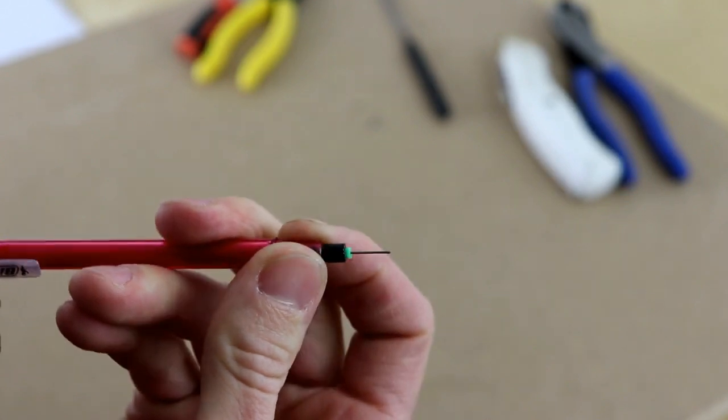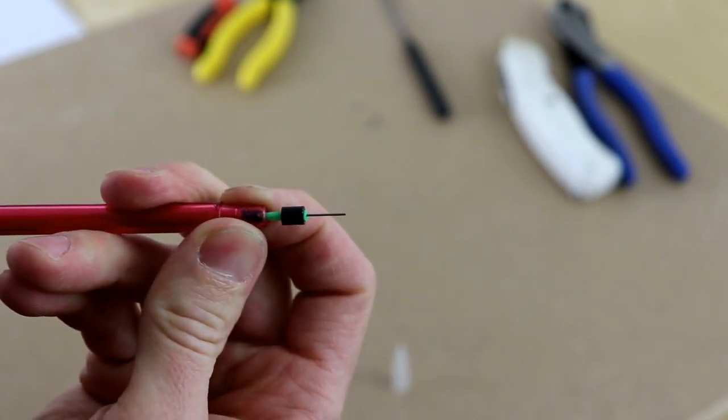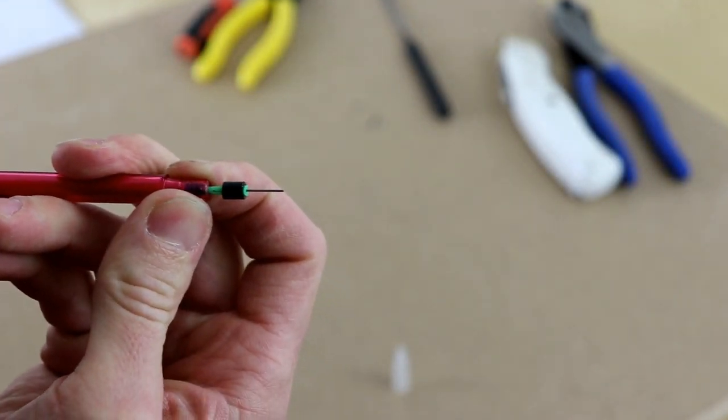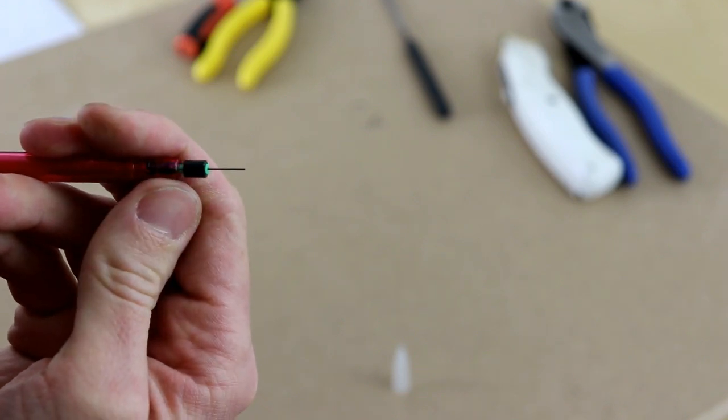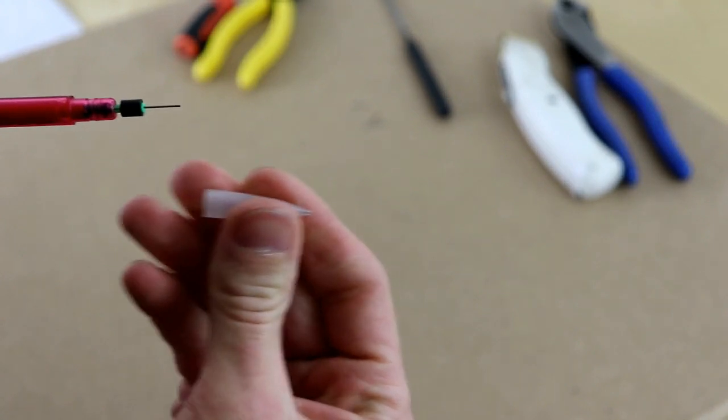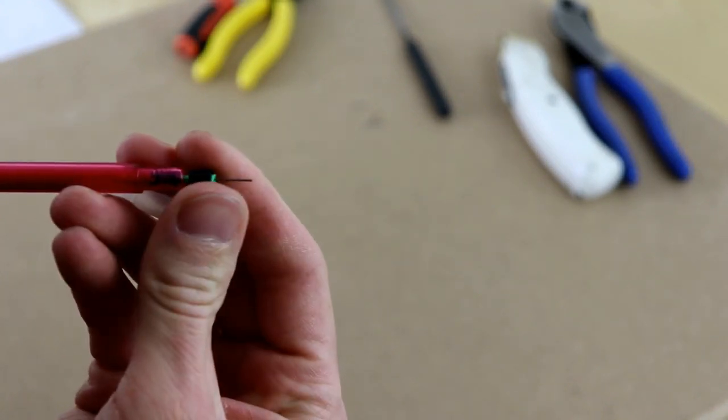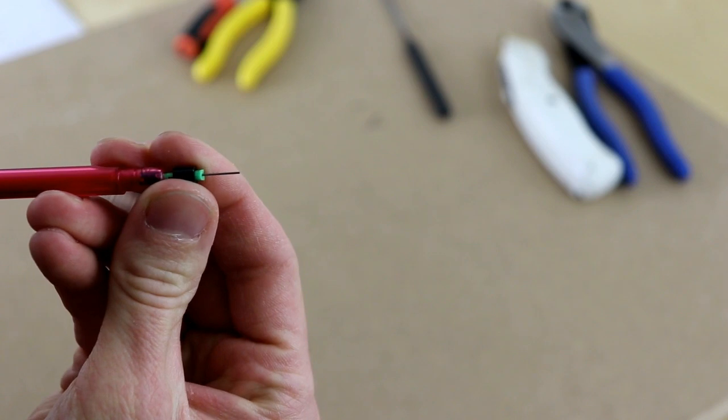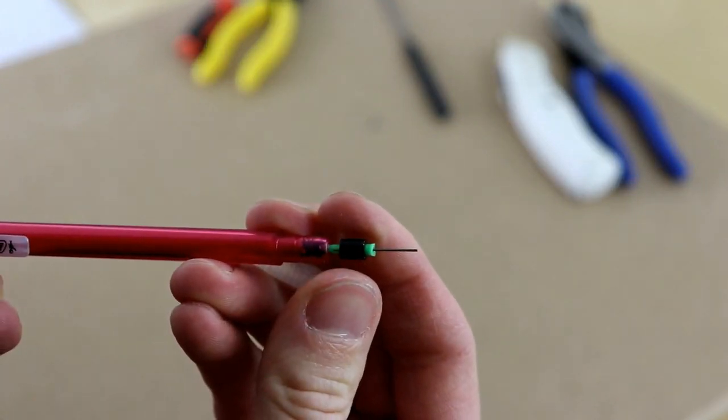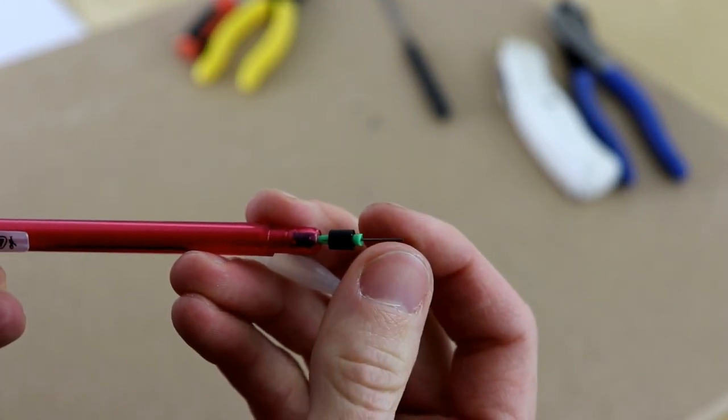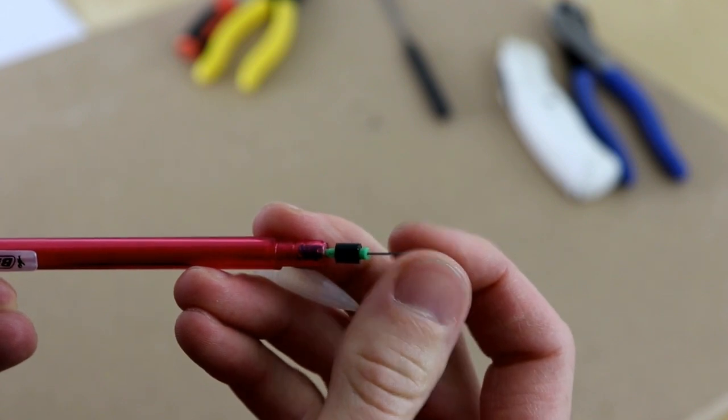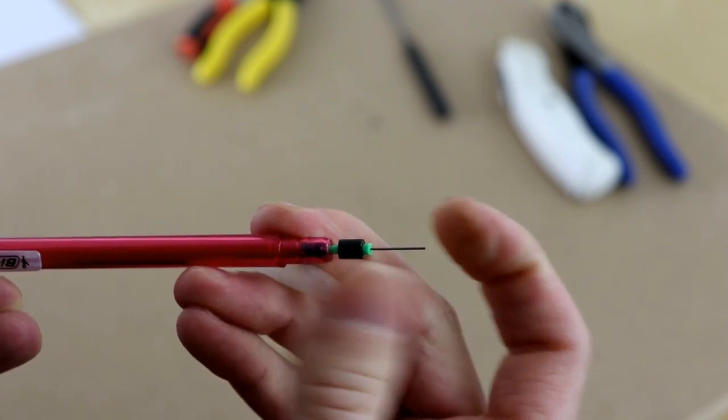Whenever we press the plunger forward the green stem extends forward and the black collar goes most of the way with it, but then near the very end there's a ridge on the inside of this nose cone that catches the black collar and holds it back from the green stem, and releases its grip and allows the lead to move forward, advanced just a little bit.